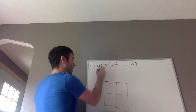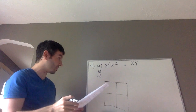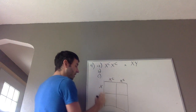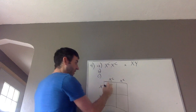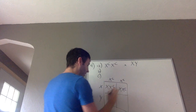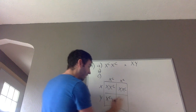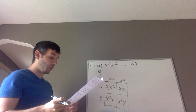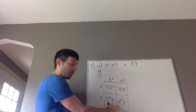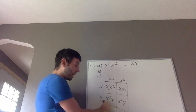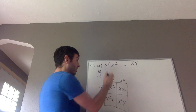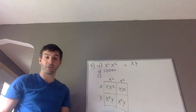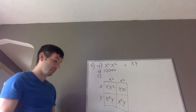Now I'm going to create the Punnett square. I'll take the two parents' genotypes and fill in: X-X-C, X-X-C, X-C-Y, X-C-Y. What percentage of the males will be colorblind? Here are the two males — both of them have the messed up, mutated X. So 100% of all male children from this cross would be colorblind.